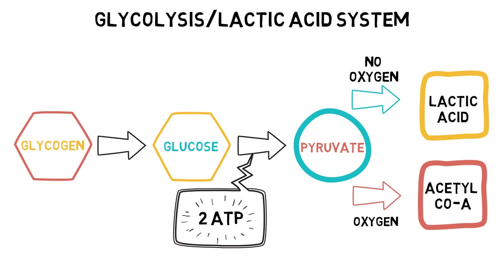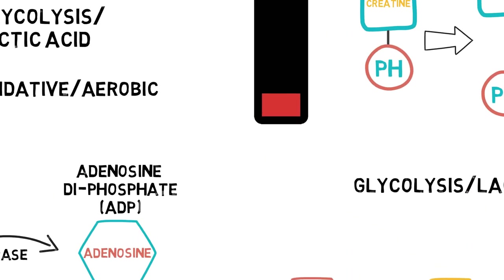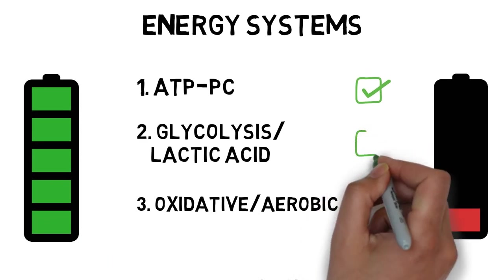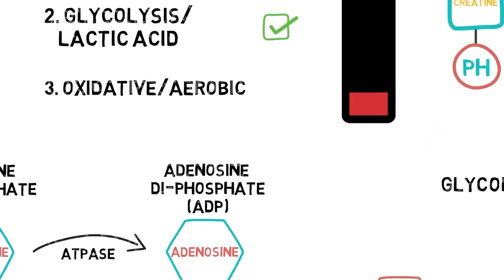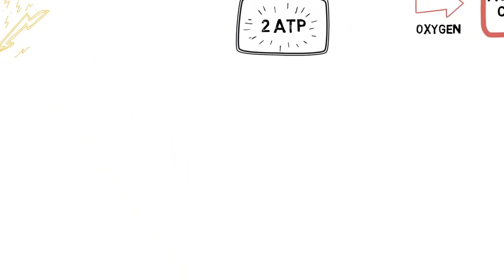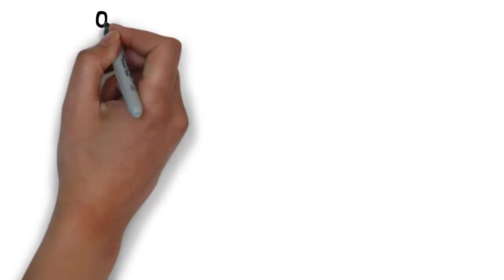Glycolysis can happen with or without oxygen present. But it's the fate of the end product pyruvate that is determined by the availability of oxygen, and ultimately how quickly ATP is resynthesised.